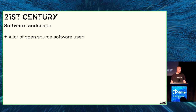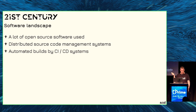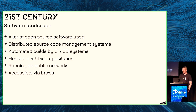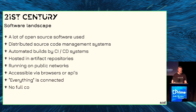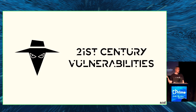These days we have a lot of open source software in use, and distributed source code management systems are normal — nobody even thinks about it. We have automated build systems, CI/CD systems. It's hosted in artifact repositories somewhere on the web, running on public networks, accessible via browsers or APIs, and everything is connected. We have no full control over the source code, but we don't care. Today we have a whole software supply chain that is totally different from the last century.